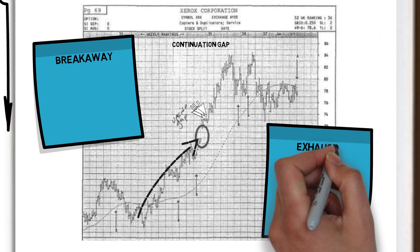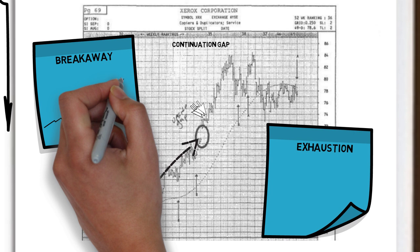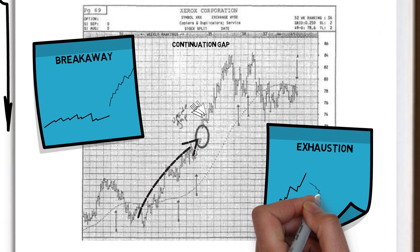The other gaps Schwartz refers to are the breakaway gap and the exhaustion gap. The breakaway gap is considered the most bullish and occurs from a base. The exhaustion gap shows up at the end of a move, and is a signal that prices are likely to reverse thereafter. Schwartz says any of these gaps can be a very good source of trading ideas.